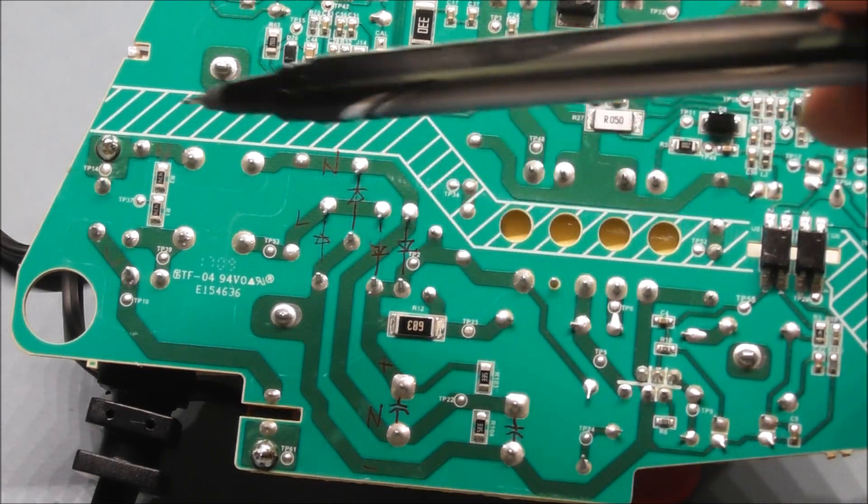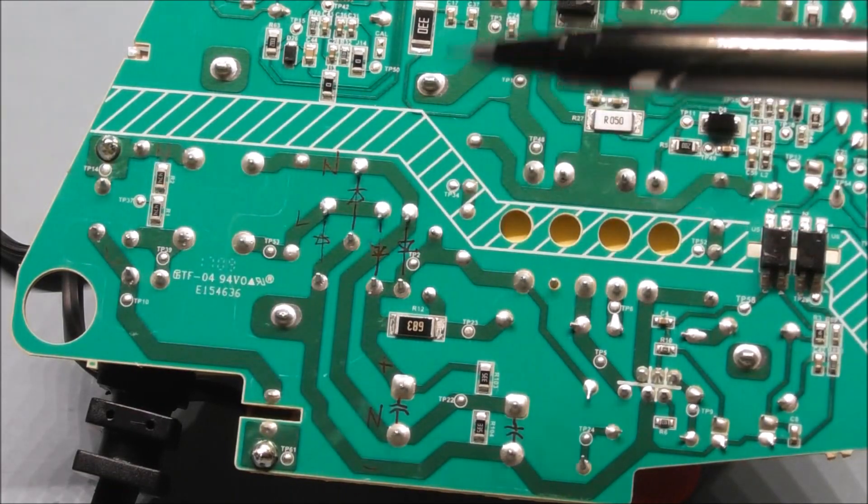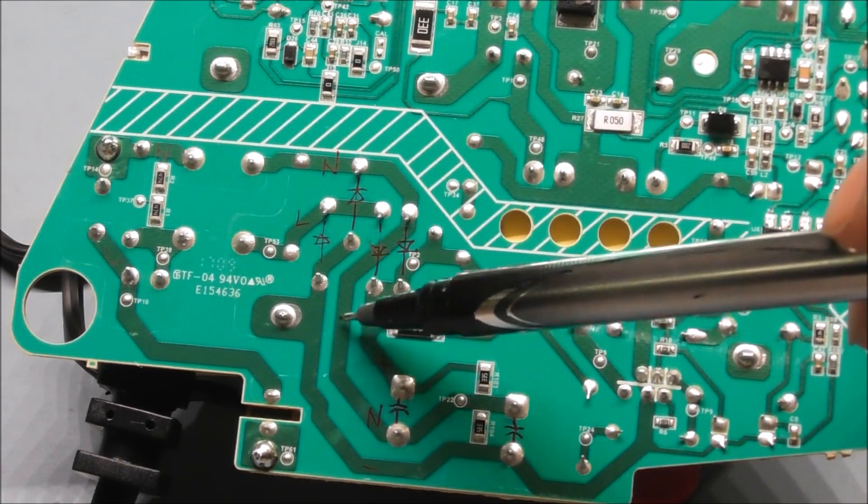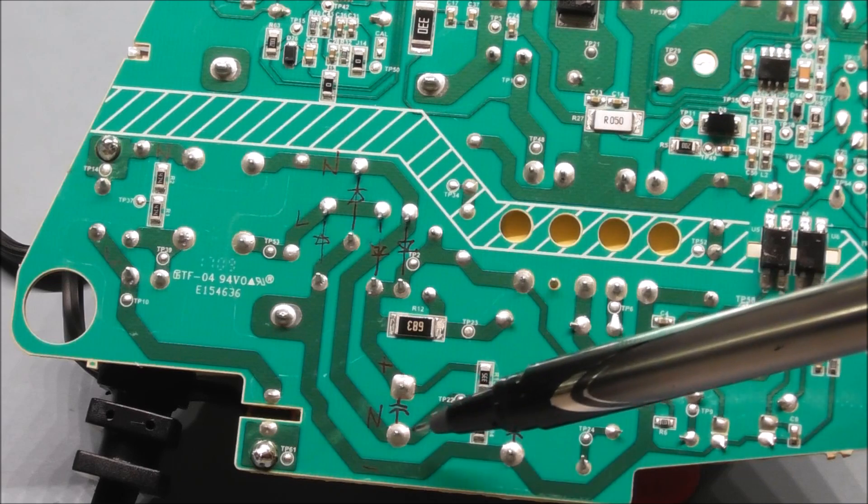So what we're going to do is first we're going to change out the MOV which is over here. And second, we will cut this trace right here. And that's the middle trace that connects to the middle of the capacitors.